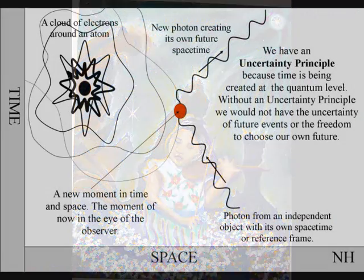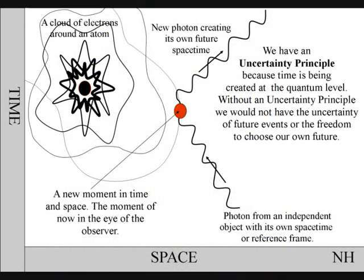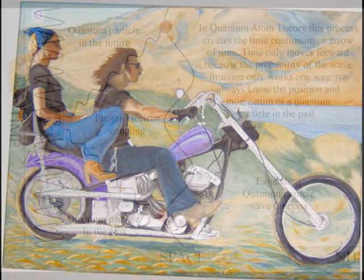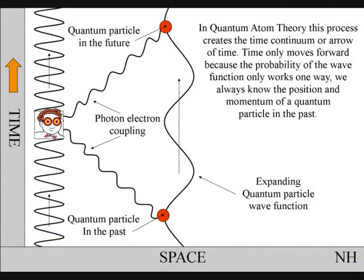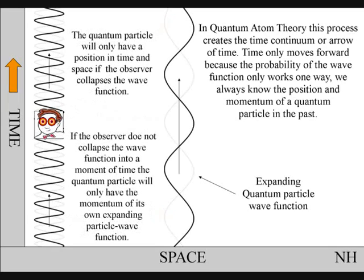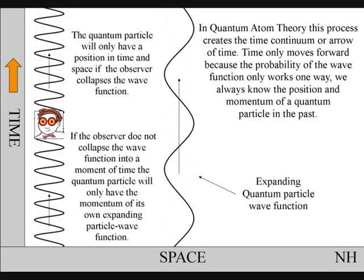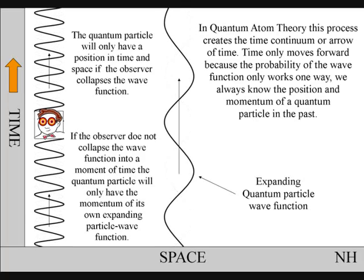The uncertainty principle of quantum physics is the same uncertainty that the observer will have with any future event. The quantum particle will only have a position in time and space if the wave particle function collapses. If the observer does not collapse the wave particle function into a moment of time, the quantum particle will only have the momentum of its own wave particle function.